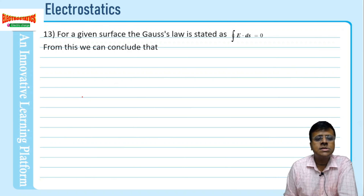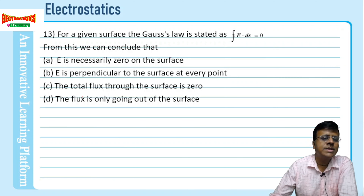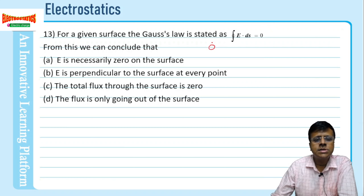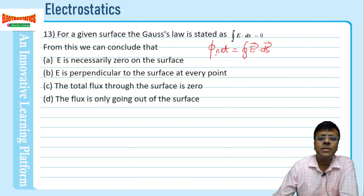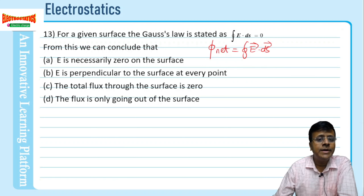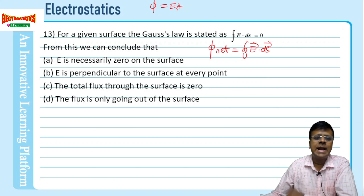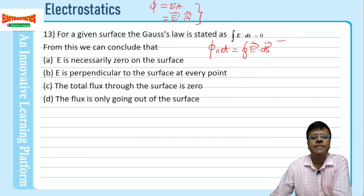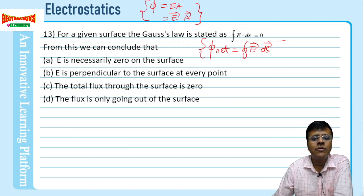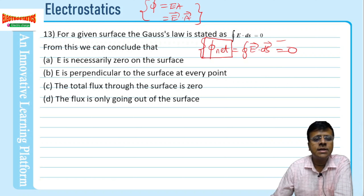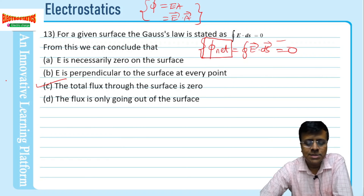Problem 13: For a given surface, Gauss's law is stated — which of the following statements are true? We know from Gauss's law that the net flux crossing a closed surface is given by the integral formula. For a uniform field we say flux equals EA, but for a non-uniform field we use the integral form. These are four different cases with different formulas. The statement that total flux crossing the surface is zero corresponds to the correct option.